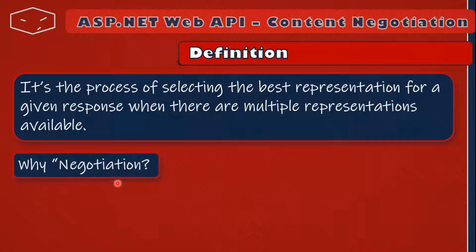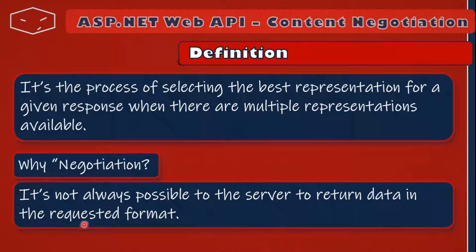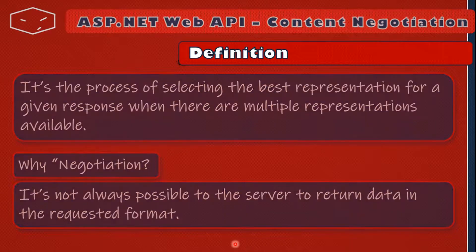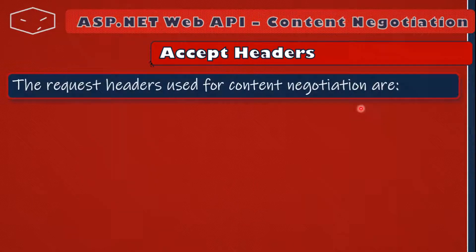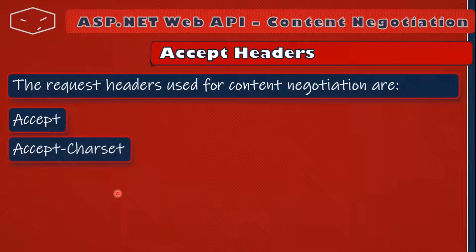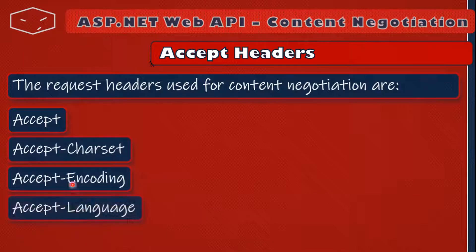Why do we say this is a negotiation? Because sometimes the client requests XML and the server cannot give you XML for some reason. So there must be a negotiation between the client and the server. The request headers used for content negotiation are: Accept, Accept-Charset, Accept-Encoding, and Accept-Language.